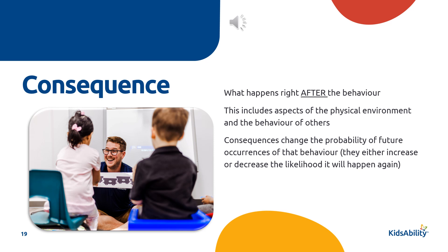Let's look at an example. If a child asks for a cookie and the parent says it's not available, but you can have a piece of fruit or a cheese string, the parent's response is the consequence. If the child then cries, screams, and hits the parent, the parent has two options. They can say 'okay, just this once' and give the cookie — this is going to increase the chance that the child will cry, scream, and hit again when told no. Our response will greatly influence whether the undesired behavior or tantrum will happen again in the future.